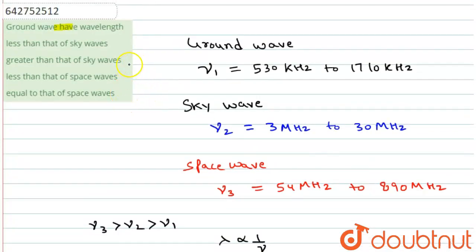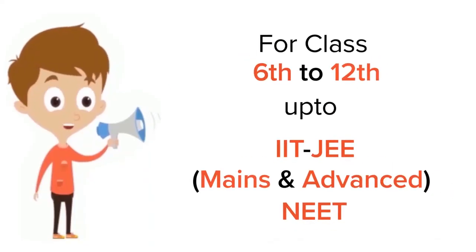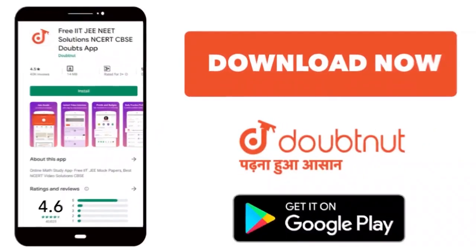The answer of this question is option B, greater than that of sky wave. Thank you. For class 6 to 12, IIT-JEE and NEET level, trusted by more than 5 crore students. Download Doubtnut app today.